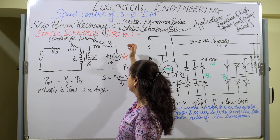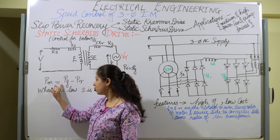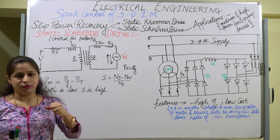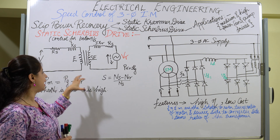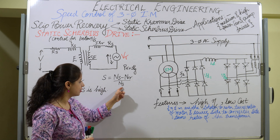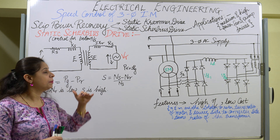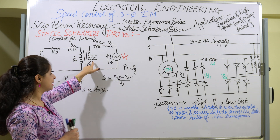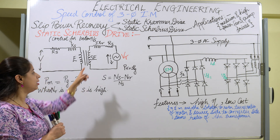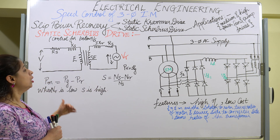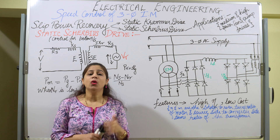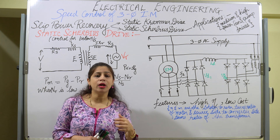This is the equivalent circuit of the induction motor. We know PM equals PG minus PR, where PR is the absorbed power. When my speed is very low, slip is high because slip is given by (NS minus NR) upon NS. Because the secondary EMF depends upon the slip, my rotor copper losses will be very high.